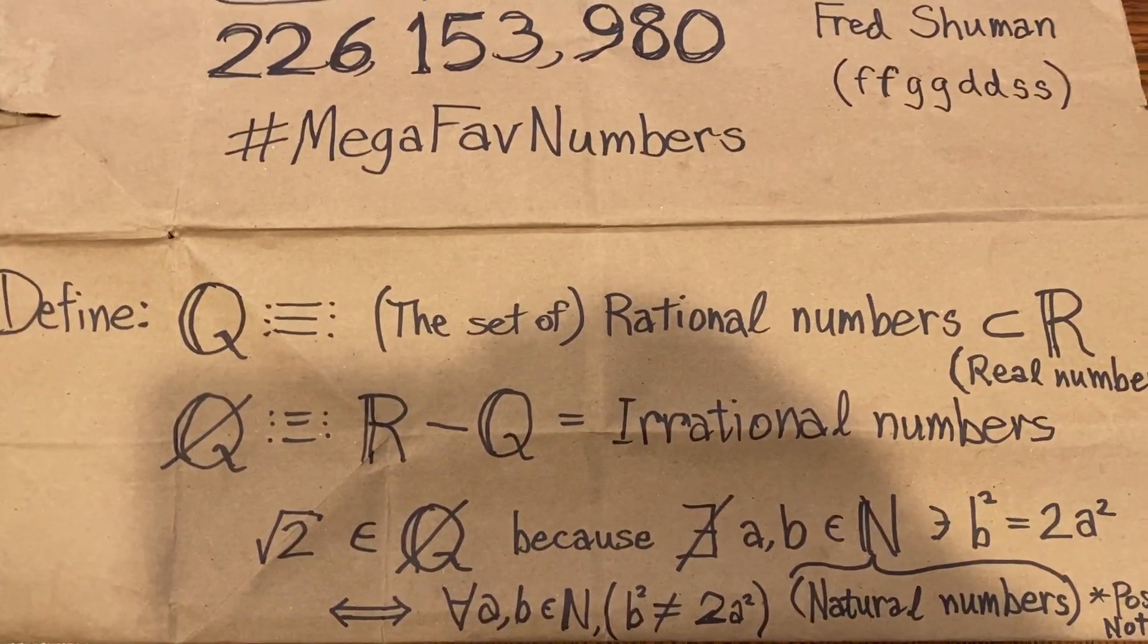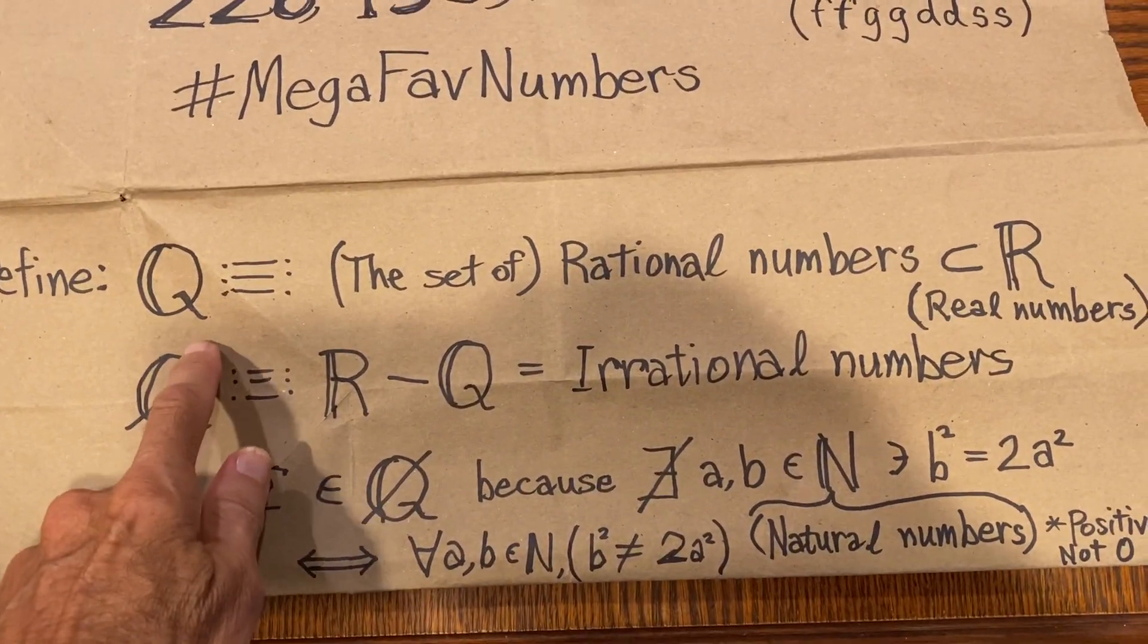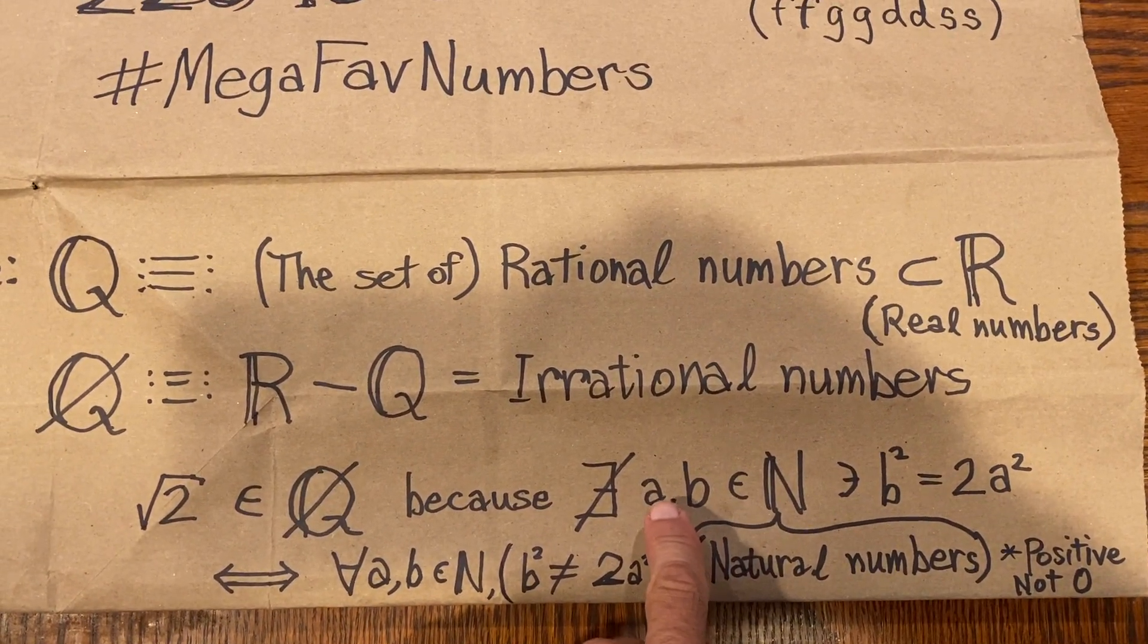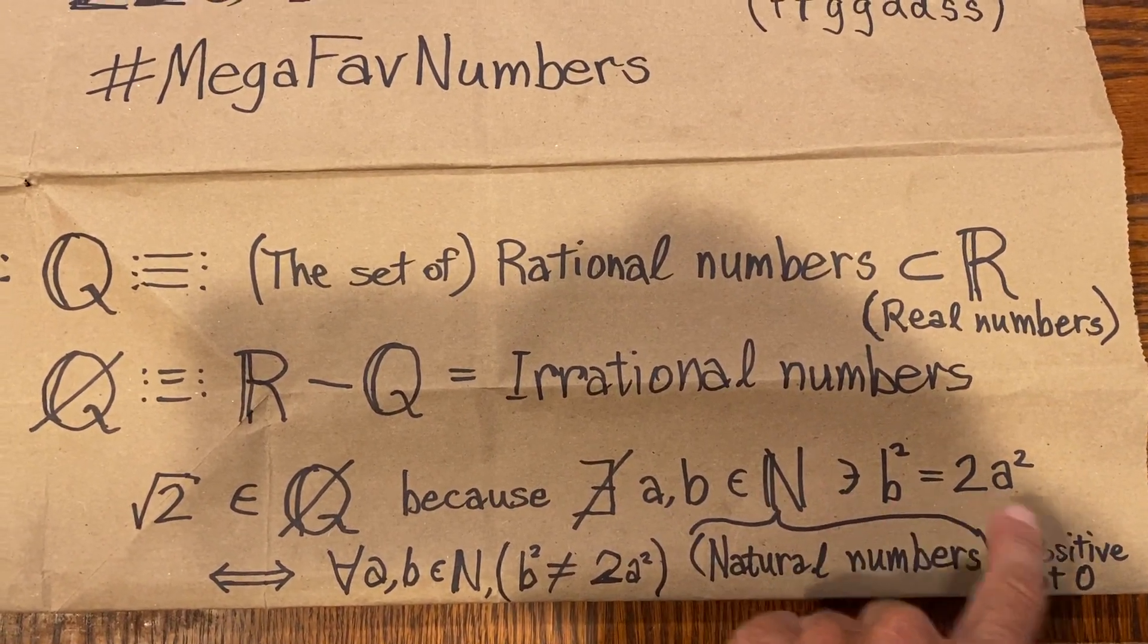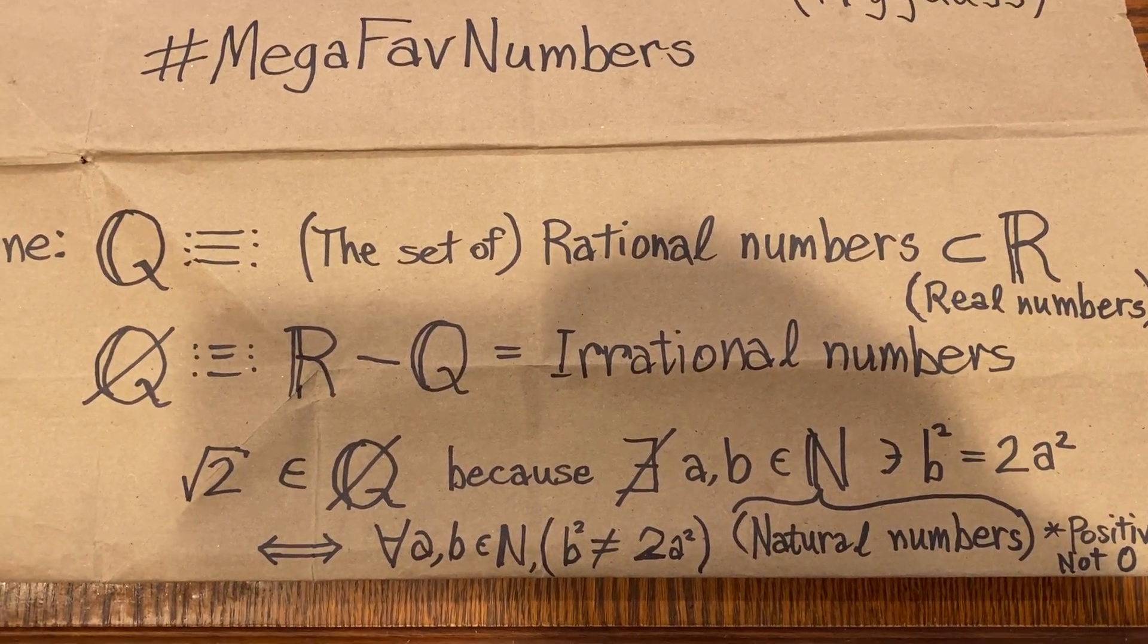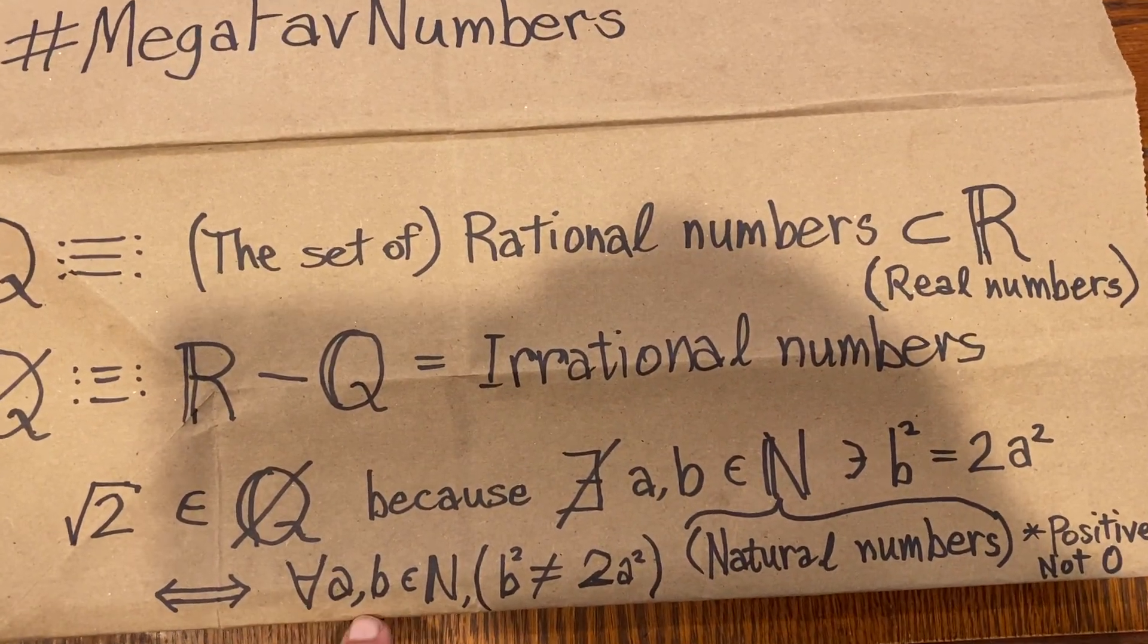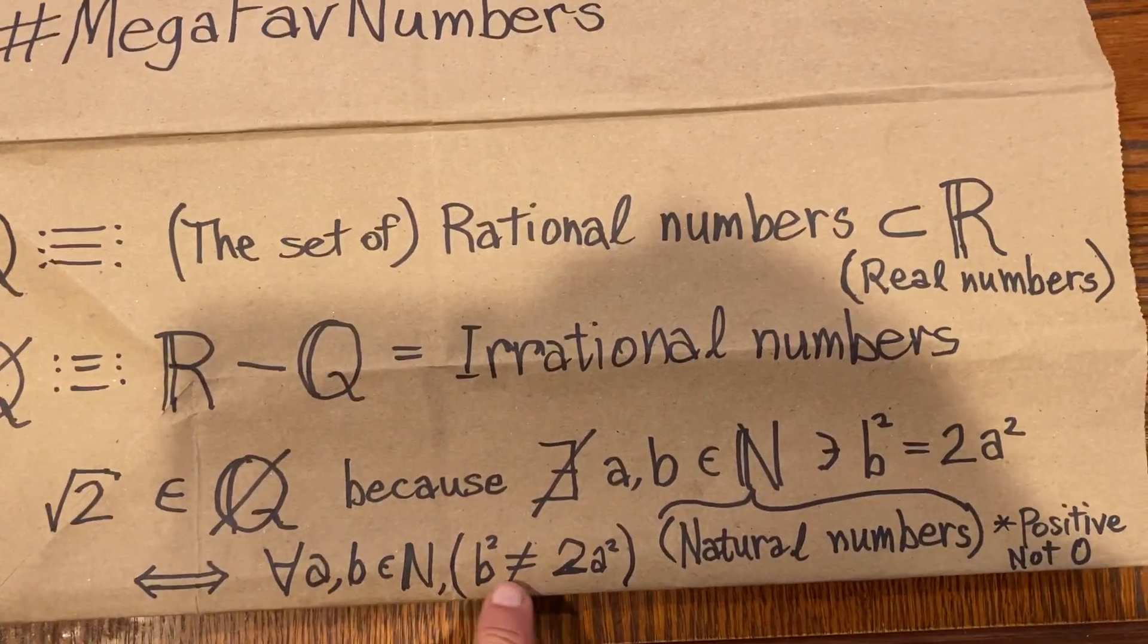Now, it's long been known that square root of 2 belongs to Q slash. That is, it's an irrational number because there are no natural numbers A and B for which B squared is equal to 2A squared. That is, no square can be twice another. Again, excluding zero. Another way to say that is that for all natural numbers A and B, the square of B is never twice the square of A.